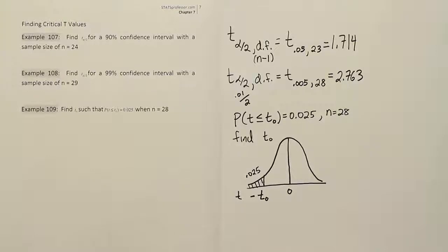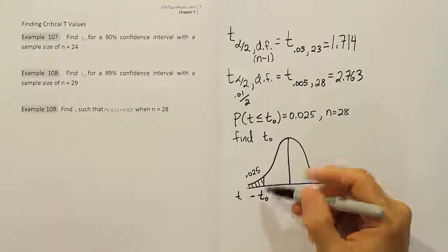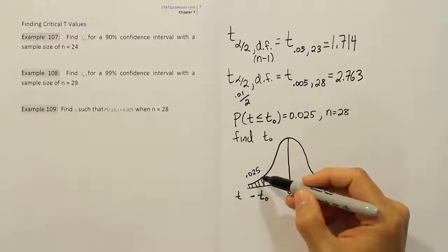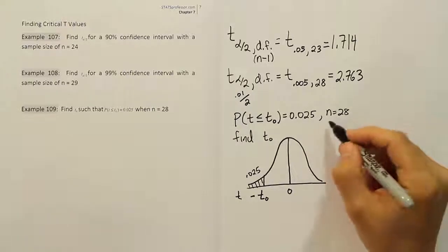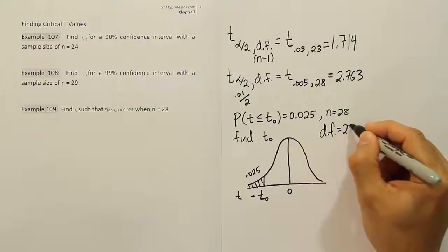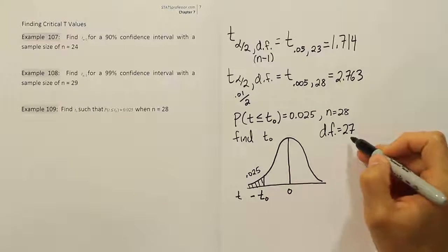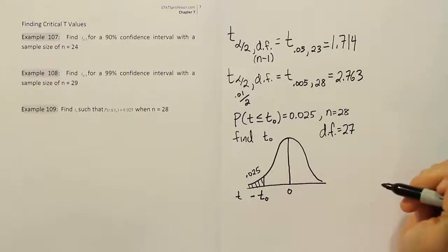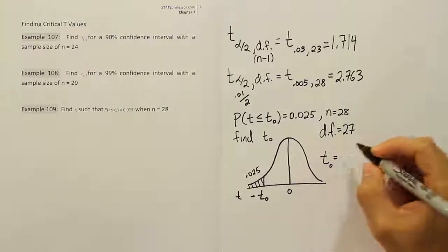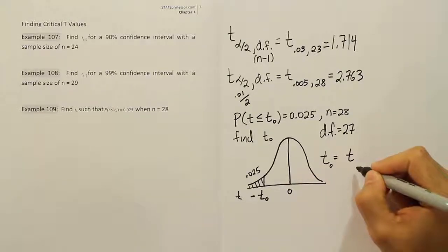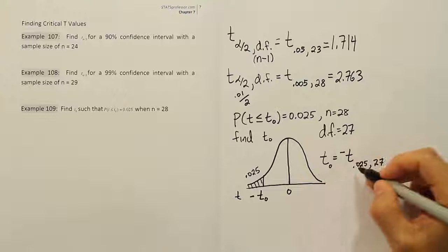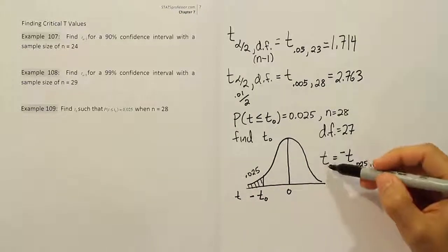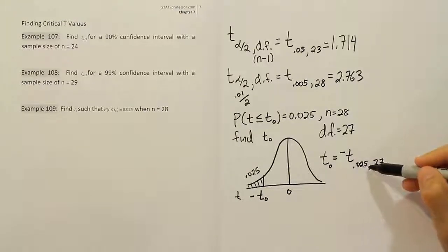The drawing shows one tail with 2.5% area, which corresponds to a specific t value. With n equal to 28, degrees of freedom is 27. So we look up 0.025 with 27 degrees of freedom. We can write t₀ as equal to negative t₀.₀₂₅ comma 27, because the t-table always gives positive critical values and this one is on the left side, so we make it negative.